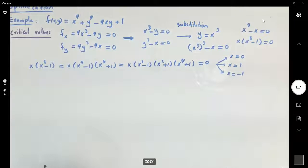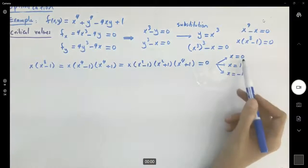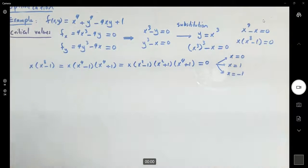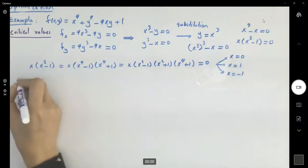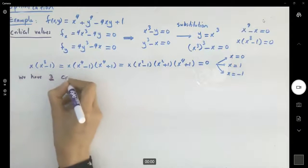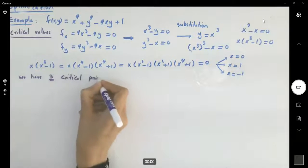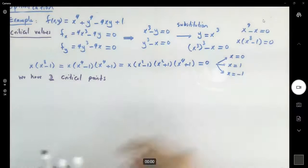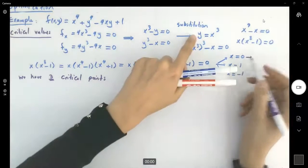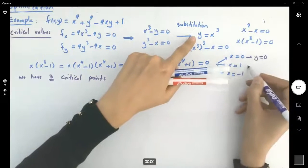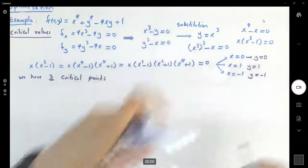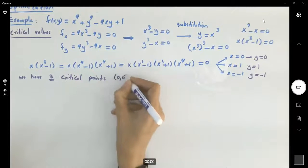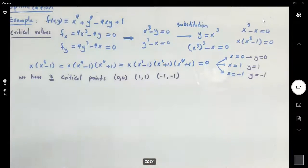Going back to the algebra, we have three critical points. When x equals 0, y equals 0. When x equals 1, y equals 1. When x equals negative 1, y equals negative 1. So our three critical points are (0, 0), (1, 1), and (negative 1, negative 1).